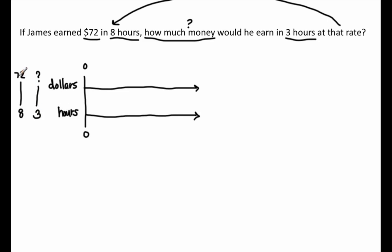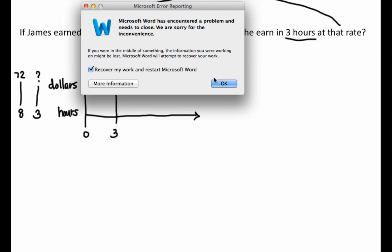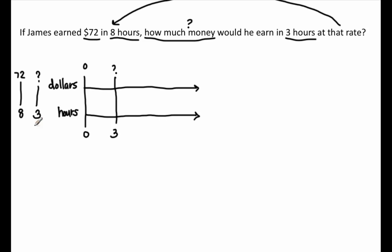The numbers associated with hours are complete; the dollars side has a question mark. Looking at eight and three, three comes first on the number line, so I'll place the three-hour comparison first, then eight hours with $72. If this were a number line, the order would be: 0, 3, 8 for hours and 0, something, 72 for dollars — so whatever the missing number is, just by looking at it, the answer has to be less than 72.